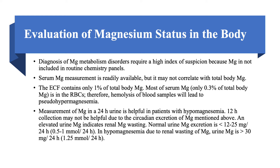How do we evaluate magnesium in the body? Unlike sodium, potassium, chloride, bicarbonate, and calcium, magnesium is not available on routine chemistry panels — you have to order it separately, as is the case with phosphate. You need to suspect it and then order it. The extracellular fluid contains only 1 percent of total body magnesium, and in the blood only 0.3 percent of serum magnesium exists, mostly in red blood cells. If you have hemolysis, you can have pseudo-hypermagnesemia, the same way you would have pseudo-hyperkalemia, because red blood cells contain a lot of potassium and magnesium.